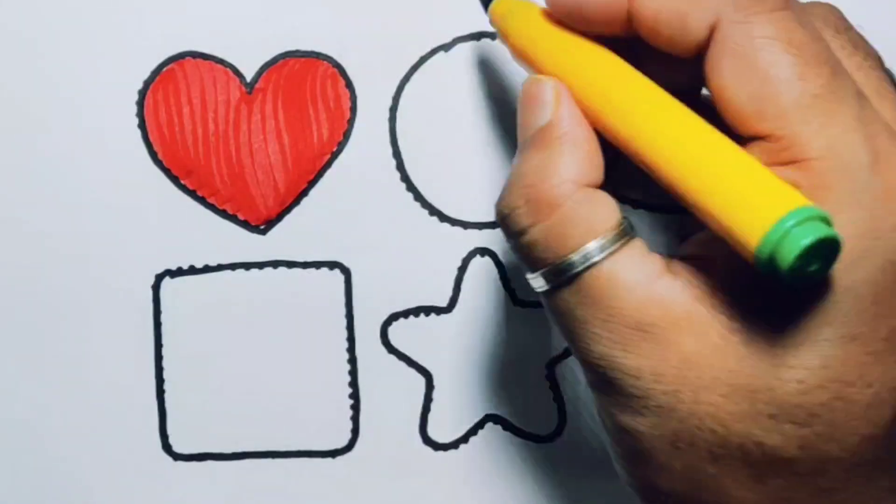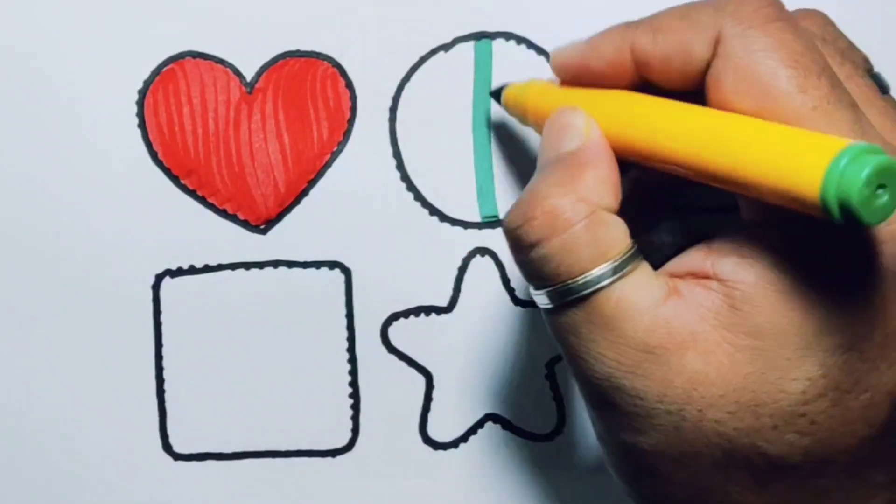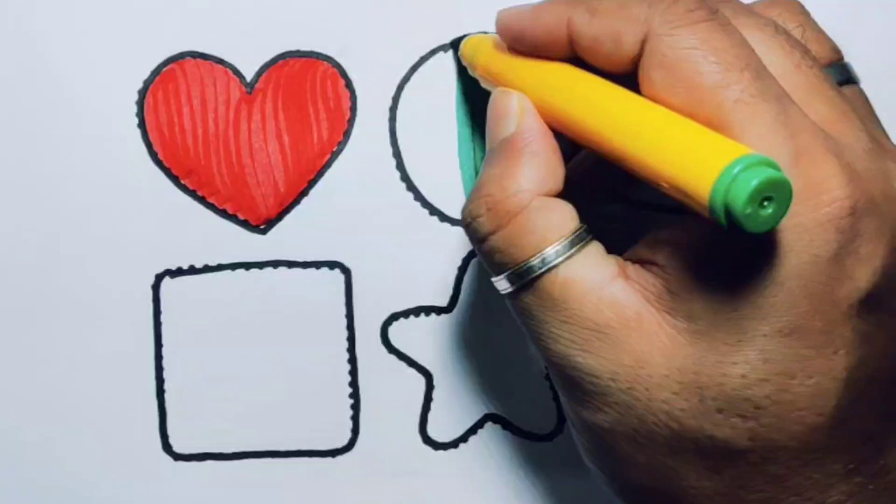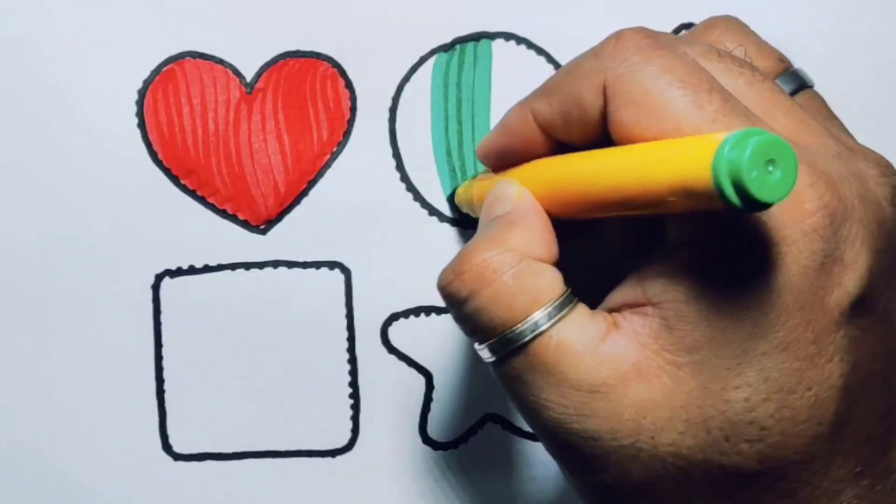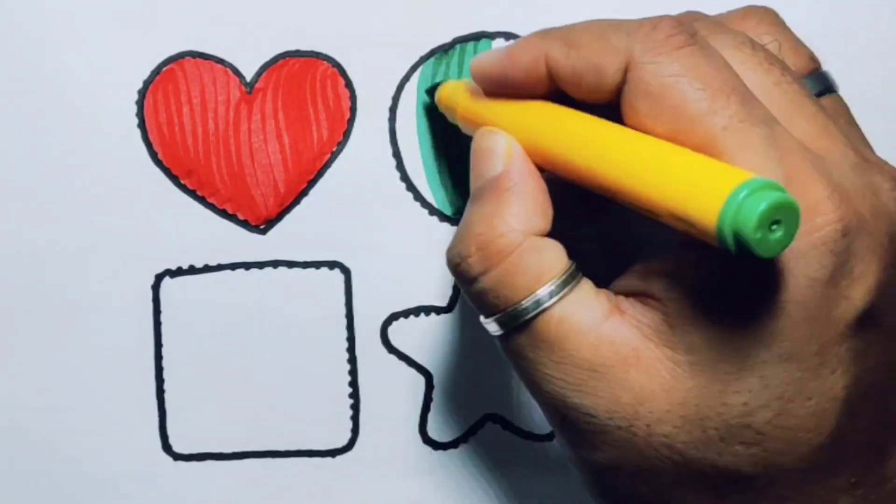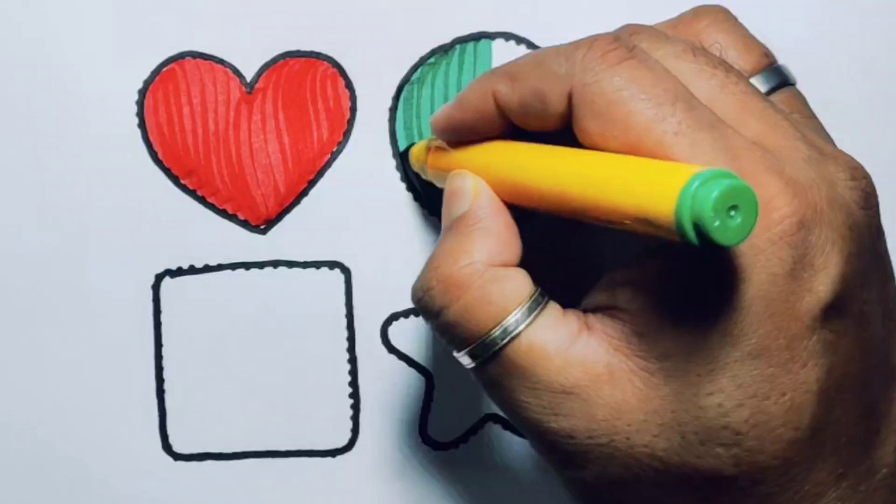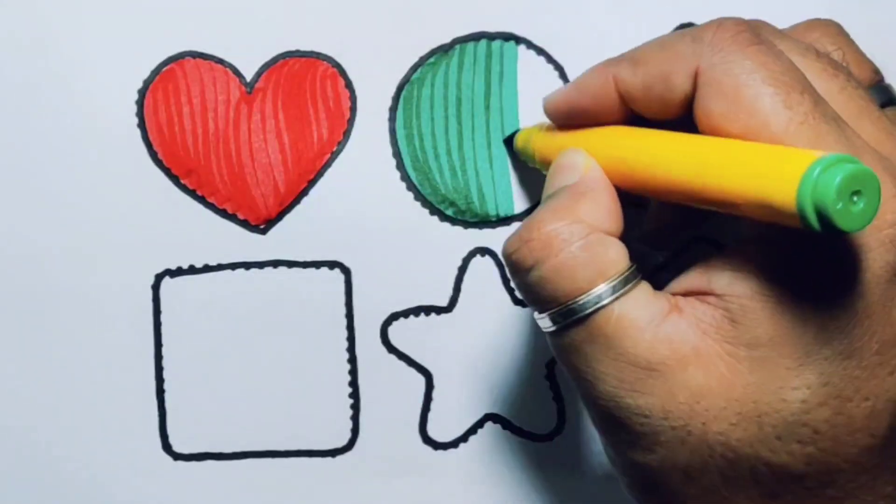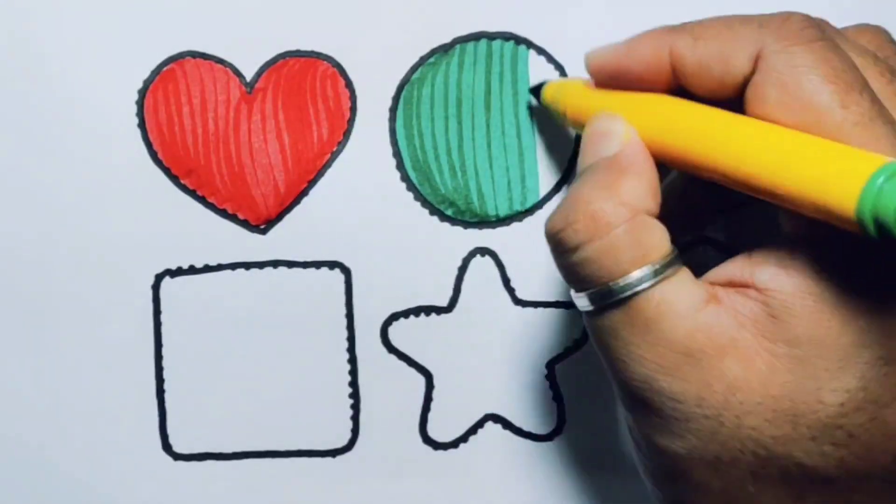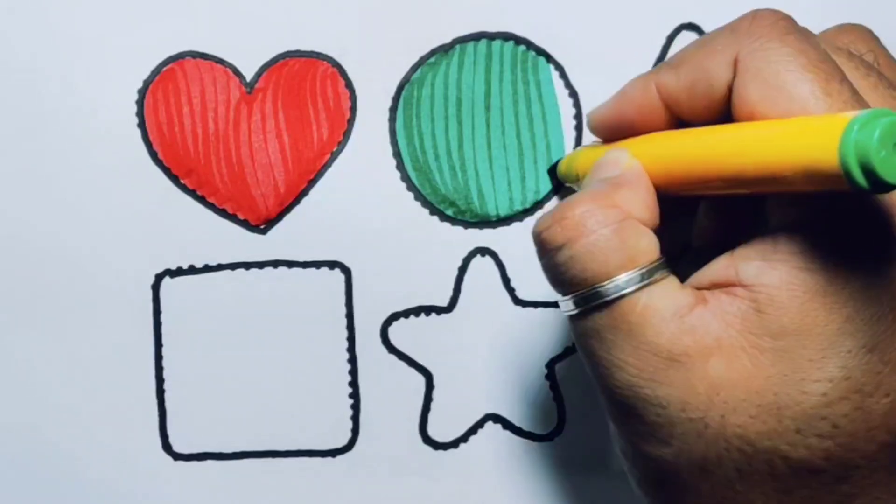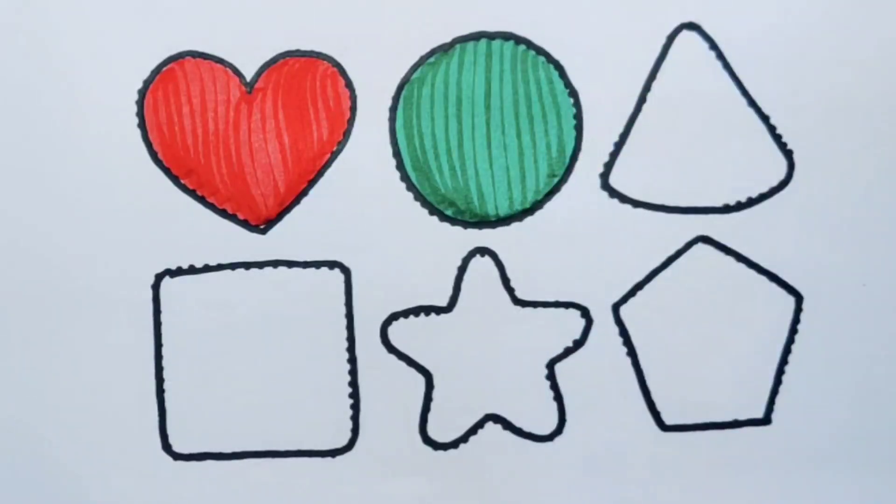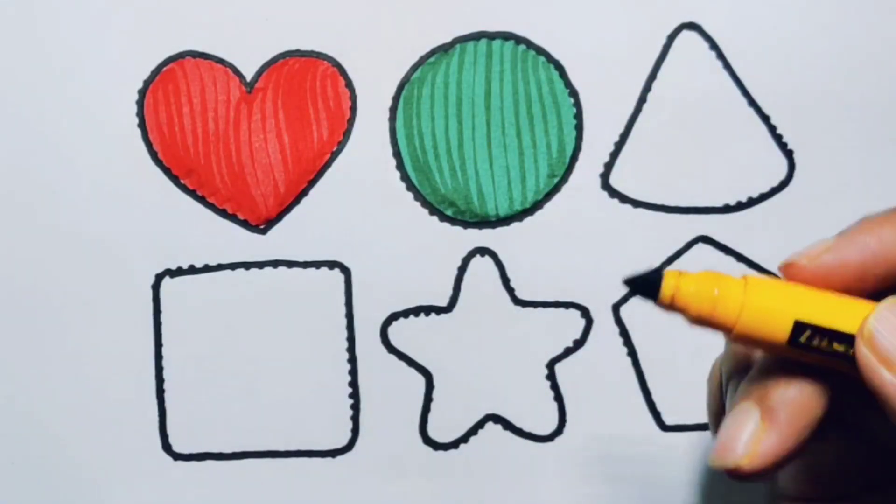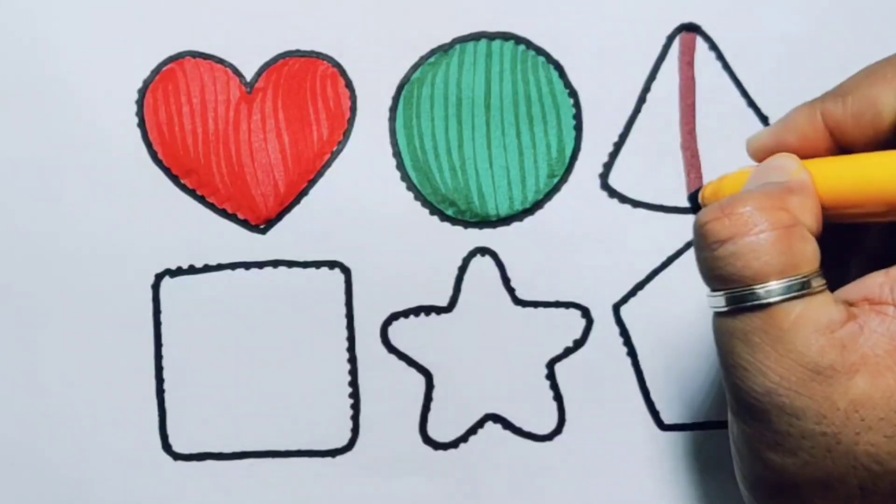Green color, circle. Chocolate colored, triangle.